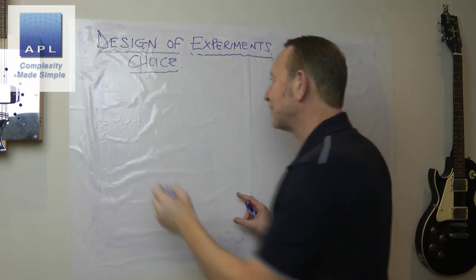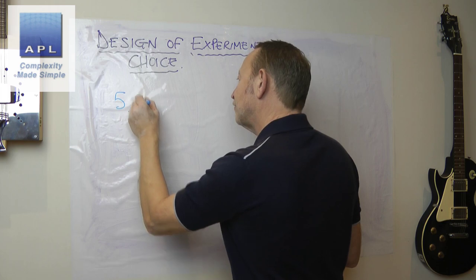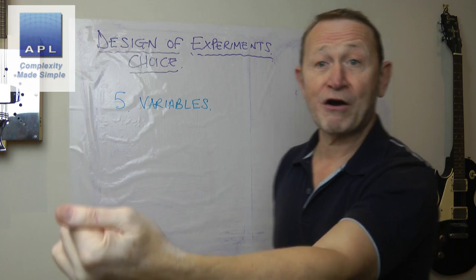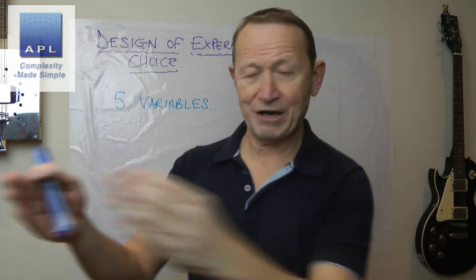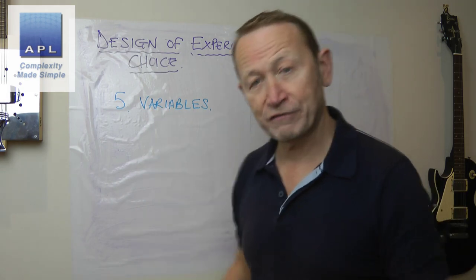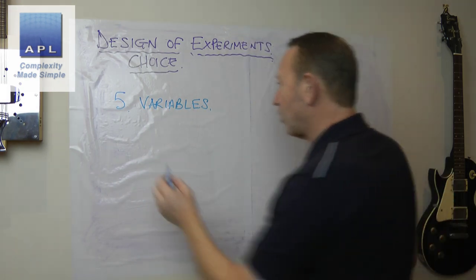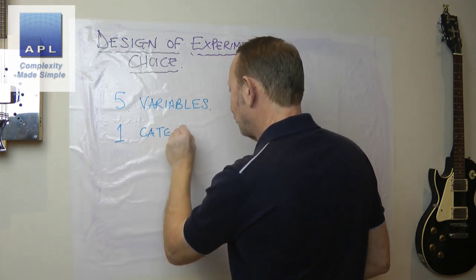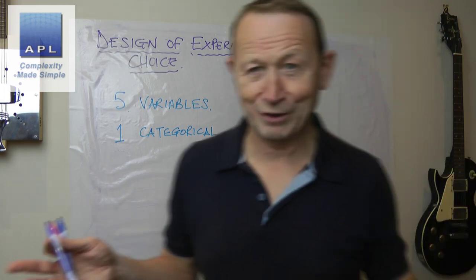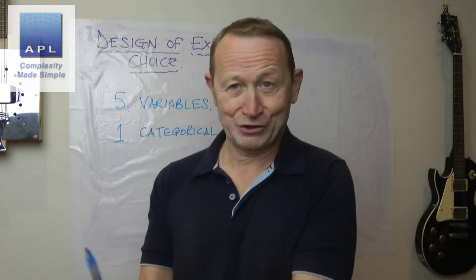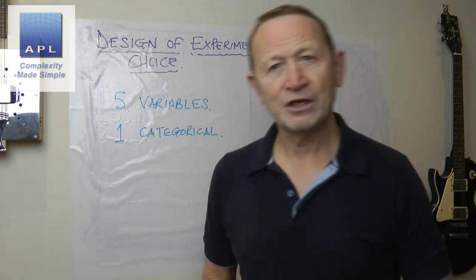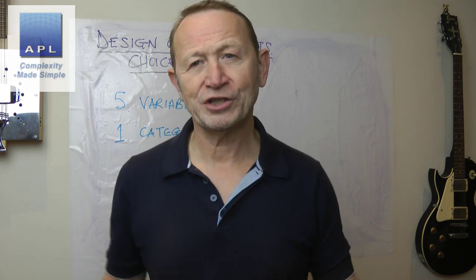The particular problem basically went like this: he said I have five variables which are genuinely variable, so they are on a scale and can be anywhere along the scale. So I've got five variables, but I've got one which is categorical. In other words, it's red, green, and blue, or it's supplier one and supplier two. There is no scale to this.